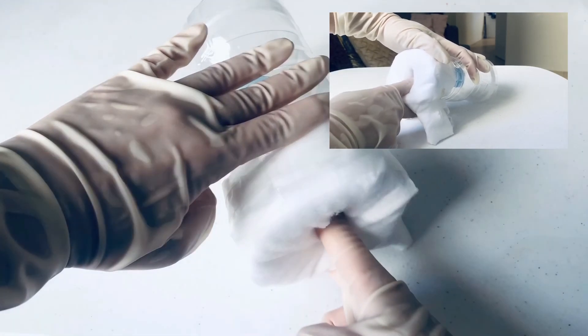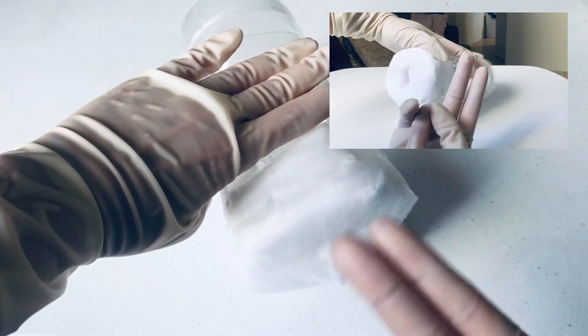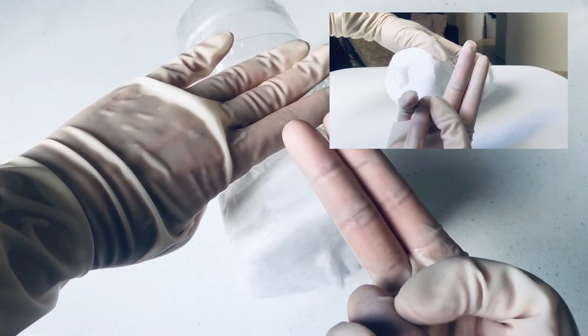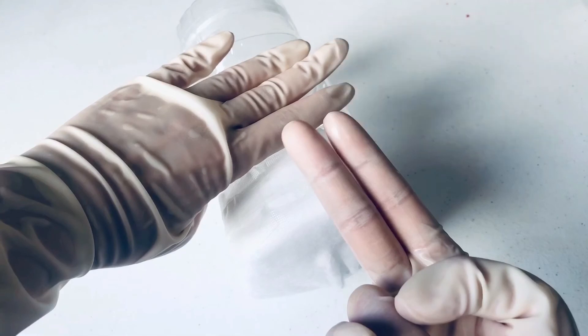Evaluate for tenderness, tumor, irregularities, fixation, and mobility of the rectovaginal septum and rectum. Remove both fingers and check for gross blood, purulent material, and any changes in the color and consistency of the vaginal discharge and stool.